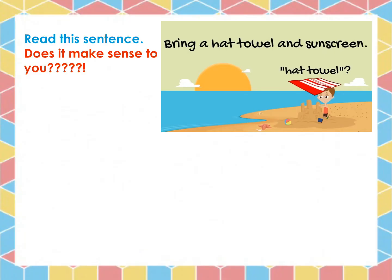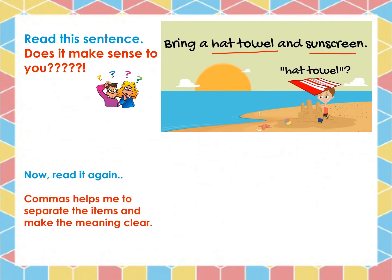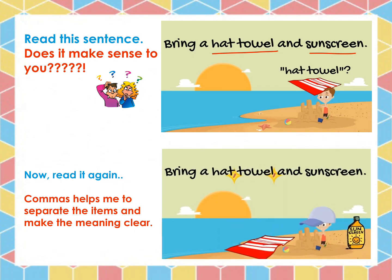Let's read this sentence together: 'Bring a hat, towel, and sunscreen.' As we know, commas help to separate the items and make the meaning clear. So I'm going to add a comma after each item. Now, reading again: 'Bring a hat, towel, and sunscreen.' Now I know that I have three items to bring with me when I go to the beach.